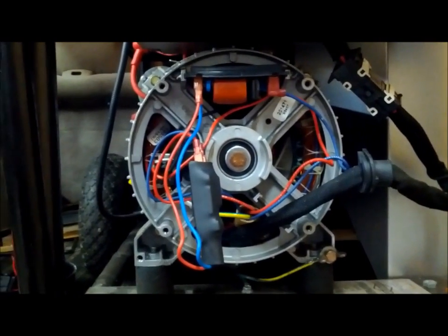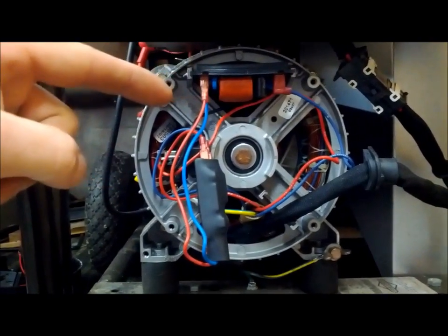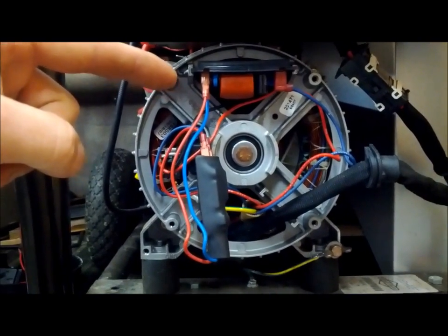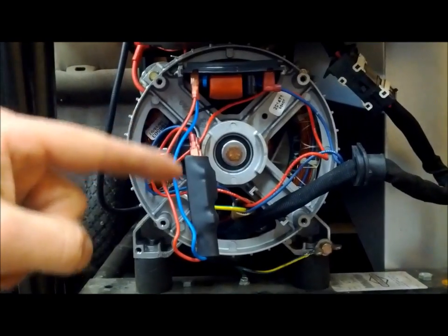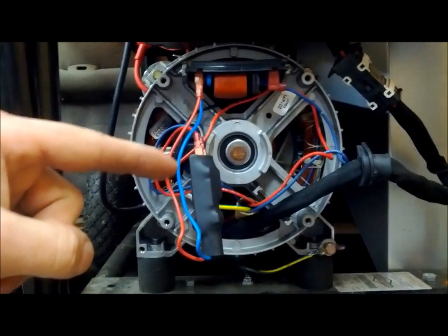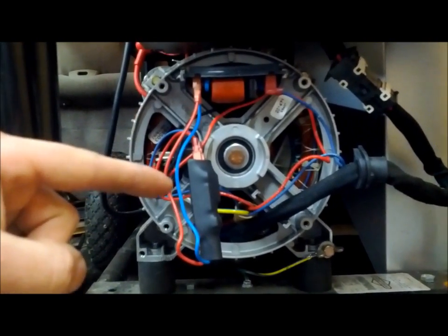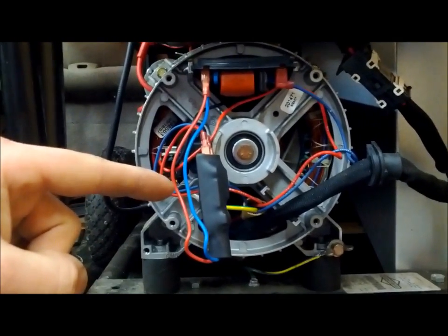Once you remove your cover, it should look something like this. Up top here is your automatic voltage regulator, also known as the AVR. Right here is an inline booster for it. If you have an older Generac like this one, yours will have it. If you have a newer one, they discontinued using it.